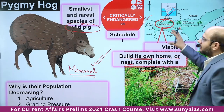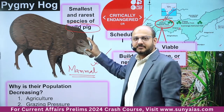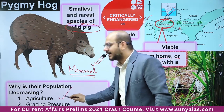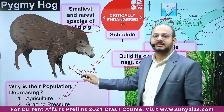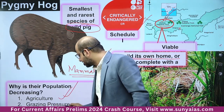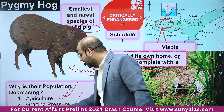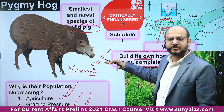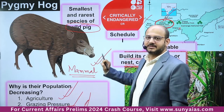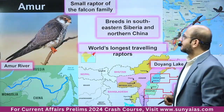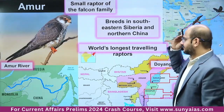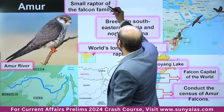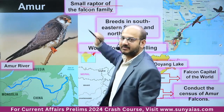The Pygmy Hog population is endangered due to habitat loss from agriculture, grazing pastures, and occasional flooding from the Brahmaputra River. Next is the Amur Falcon — a small raptor of the falcon family.